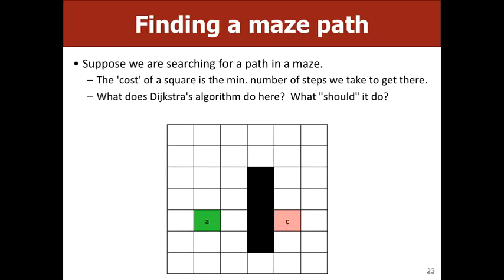Let's talk about A*, which is like Dijkstra's plus plus. Say we're trying to find a path from A to C with some obstacle in the middle. Dijkstra's doesn't know where the target is, so it explores all directions — up here, over here — before reaching C. It doesn't know to move toward the target.